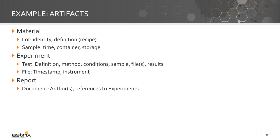We'd also have an experiment related to the actual bioreactor itself with similar things. And then we have another important artifact in this group's process, which is the report itself. It's got authors associated with it, references to experiments, and it describes a particular type of scope. It may describe a particular material — a protein — via the experiments, or it may be explicit. It may be a report that summarizes a particular set of experiments, or a higher-level report about a particular higher-level material. This is an example of the artifacts that would come out of this analysis.